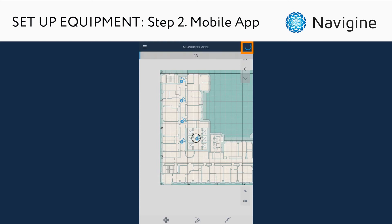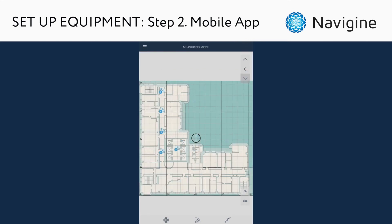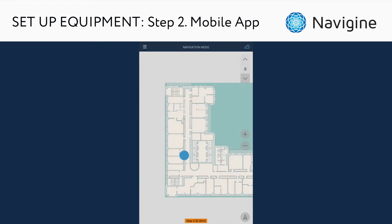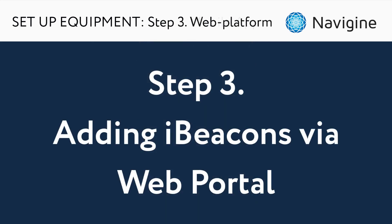The next important step is to upload the map to the cloud via the location manager. Tap the cloud button and wait while the information about your locations is uploading. Now you can check navigation by switching to the navigation mode. If you think the accuracy is not enough, you can try radio map measurement — please contact a Navigin representative for more details.